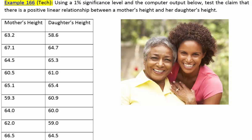Example 166, tech. Using a 1% significance level and the computer output below, test the claim that there is a positive linear relationship between a mother's height and her daughter's height. Okay, so let's start with the claim.